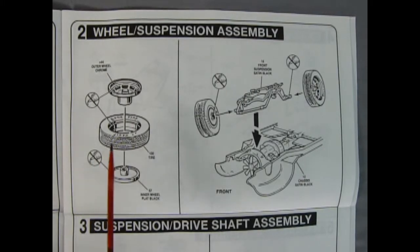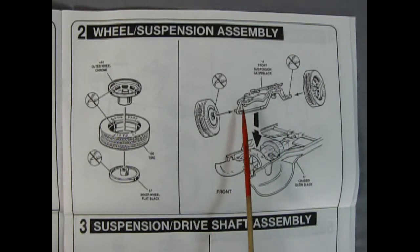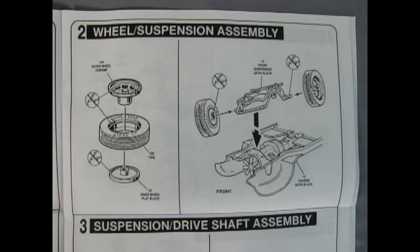Our front wheel assembly is quite simplistic as you have the outer wheel, the tire, and the wheel back which all sandwich in together and then they glue onto this one piece front suspension which then drops onto our chassis.